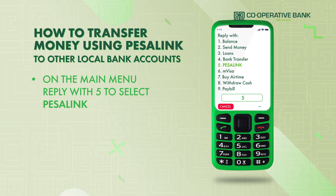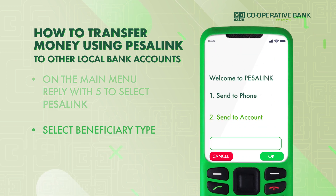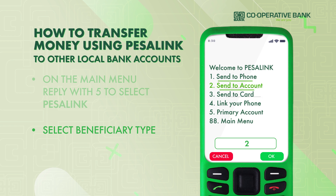On the main menu, reply with 5 to select Pesalink. Select Beneficiary Type: Send to Phone, Send to Account, or Send to Card.